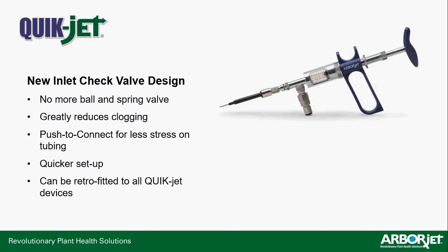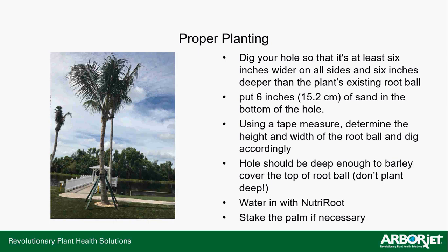For those still using the original QuickJet on palms — don't over-pressurize it; let the product ease in. The new inlet check valve greatly reduces clogging, which was an issue at the push-to-connect where the line attaches. It also reduces stress on the tubing and prevents the line from separating from the old valve. It allows quicker setup and can be retrofitted to all existing QuickJet devices as an aftermarket piece.